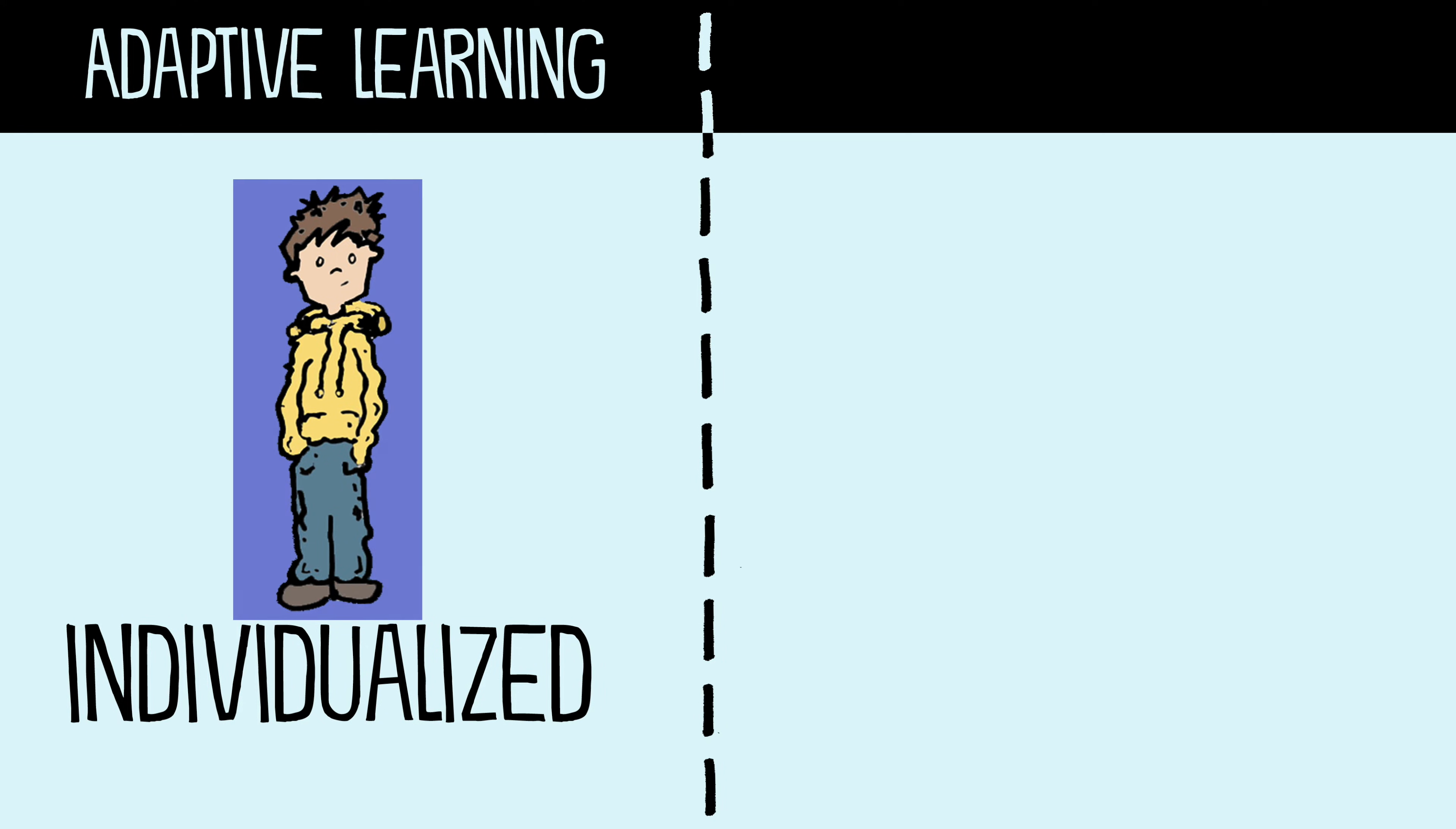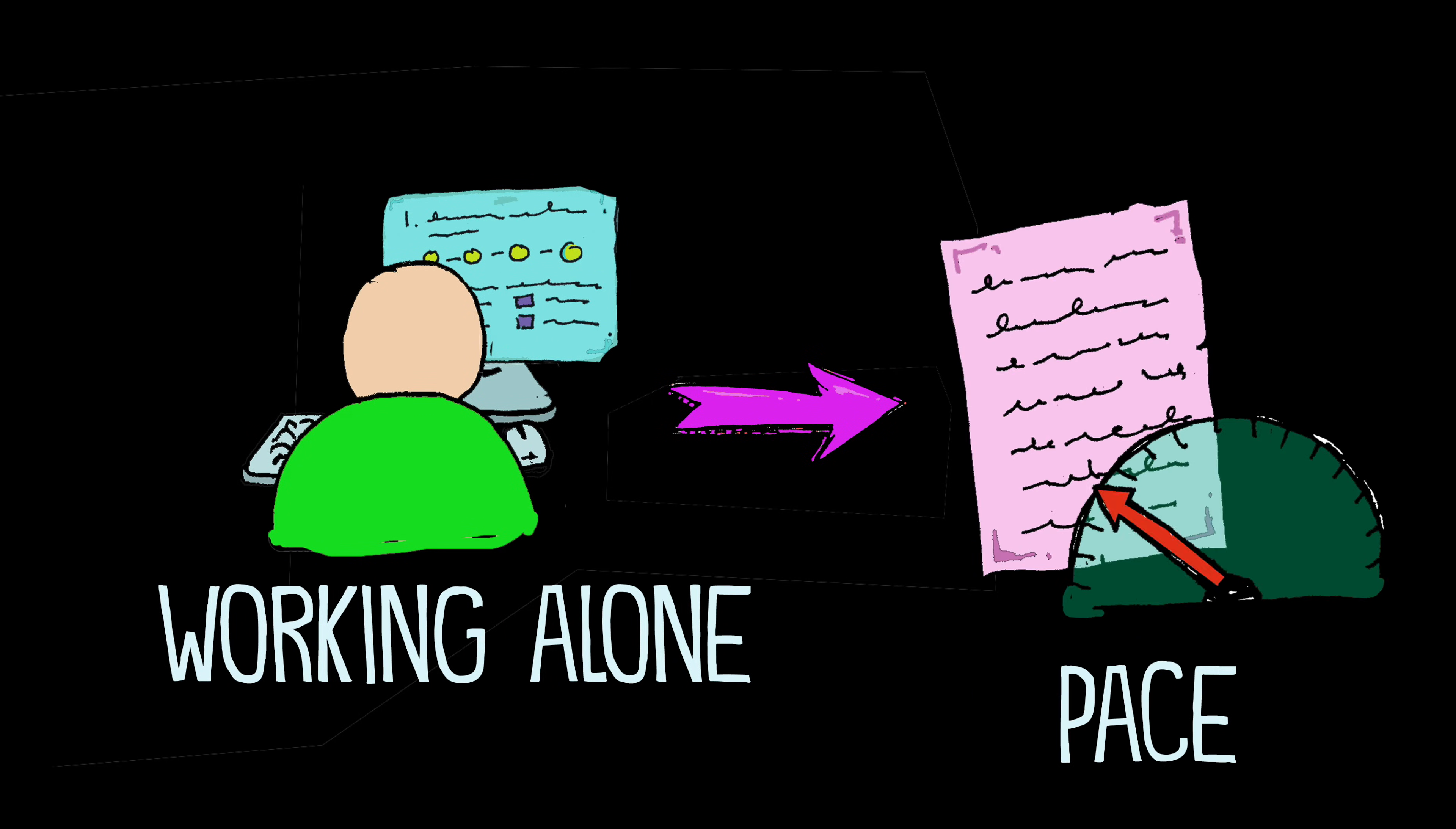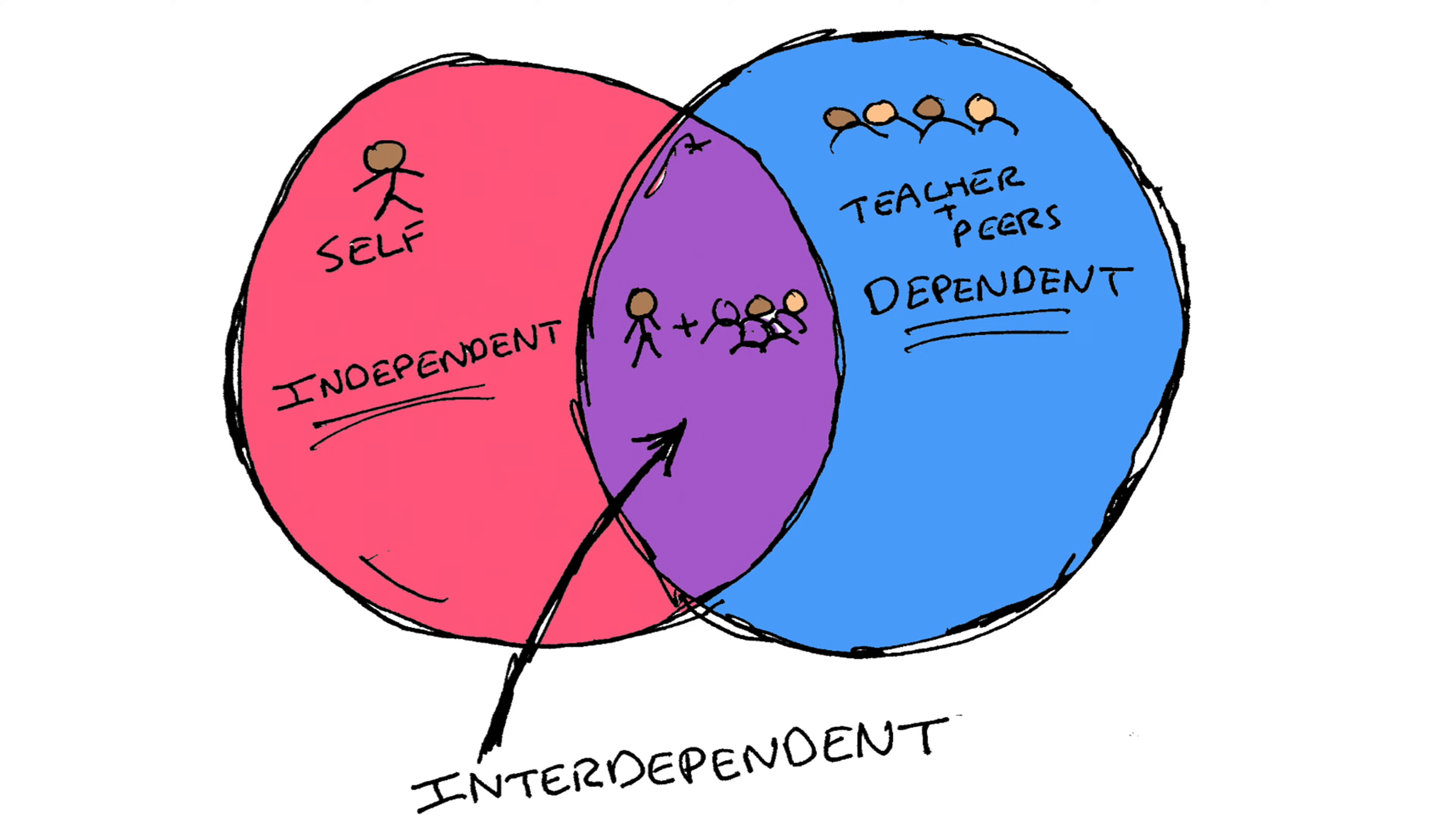Adaptive learning is individualized with students working alone at a computer. The work is at their level and follows their pace. By contrast, personalized learning is more collaborative with a focus on interdependent work.